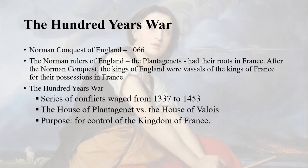1066 is a date familiar to us — the Norman conquest of England. The Norman rulers, who came to be known as the Plantagenets, were nobles from France who had territories under their control in France. The Hundred Years War can be seen as a series of conflicts lasting from 1337 to 1453, between the house of Plantagenets, rulers of England, and the house of Valois, the rulers of France. The purpose was to control the kingdom of France.